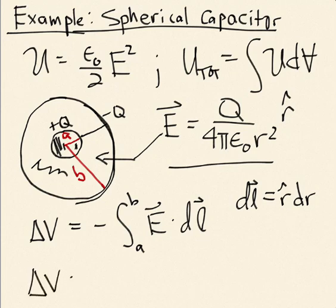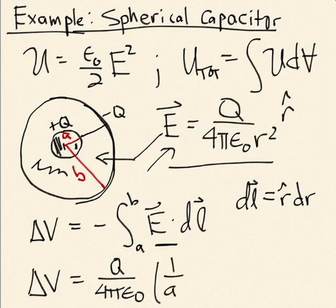So I can go straight from this point here out to this point. My DL in that case will be R hat times DR. Now if I go through and do this integral, if you take this expression for the electric field up here and plug it in down here, what you find is that the potential difference between the shells looks like Q over 4 pi epsilon naught, 1 over A minus 1 over B. And from that, now I can extract the capacitance.